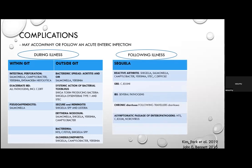Post-illness complications include reactive arthritis following Shigella, Salmonella, Campylobacter, Yersinia, STEC, and C. difficile; Guillain-Barré syndrome secondary to Clostridium jejuni infection due to antibody cross-reactivity and molecular mimicry; irritable bowel syndrome from multiple pathogens; chronic diarrhoea in about 1% of travellers following traveller's diarrhoea; and asymptomatic carriage of non-typhoidal Salmonella, Clostridium jejuni, and norovirus.